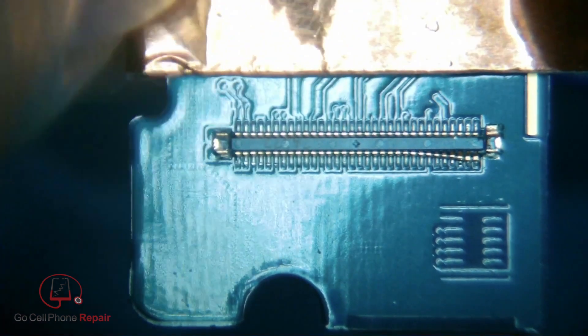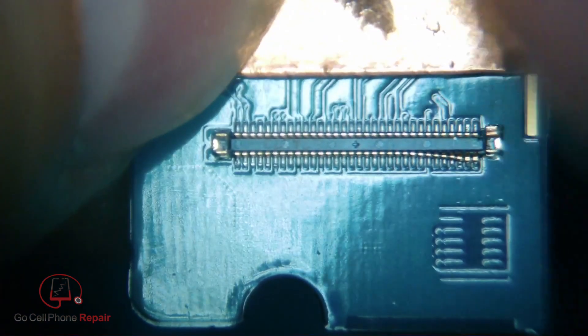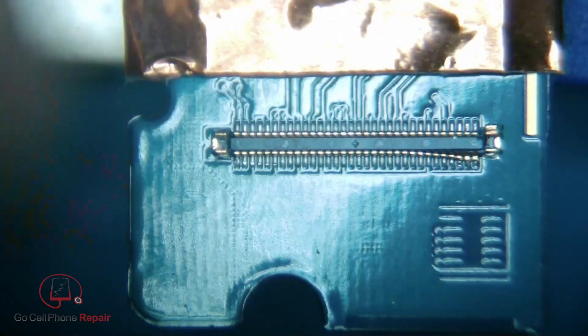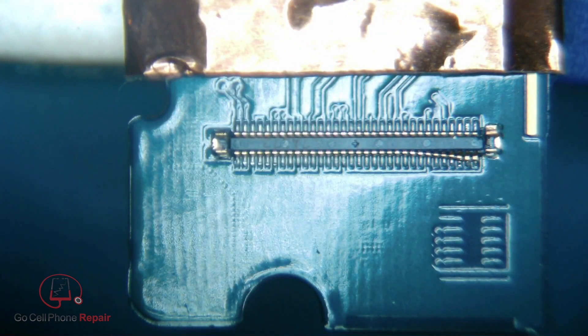So what I'm going to do is start by taping down the surrounding area. If you're very careful, you can probably get away without this. But just to be safe, I like to get a little bit of this gold tape over the surrounding components. That way, if you get a little too much airflow, you don't blow anything off of the board.